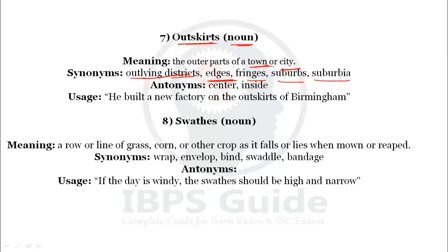Antonyms of outskirts: center and inside. Example use: 'He built a new factory on the outskirts of Birmingham' — on the outer portion of the city, slightly outside the main city of Birmingham, he built a new factory.